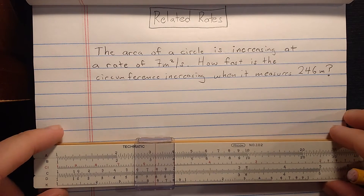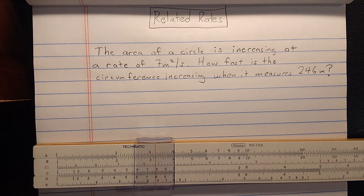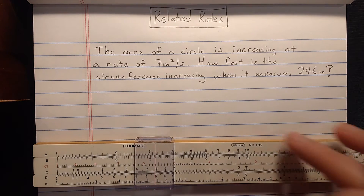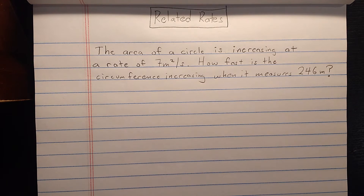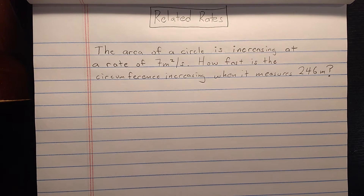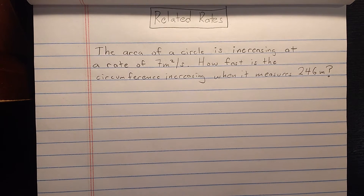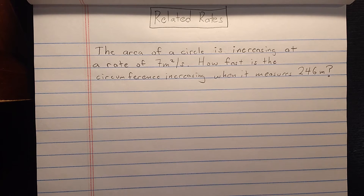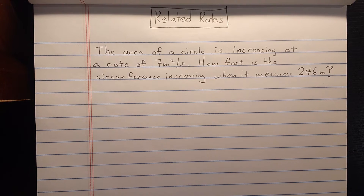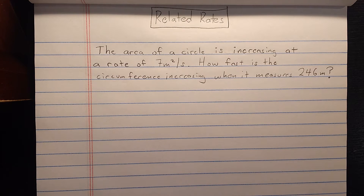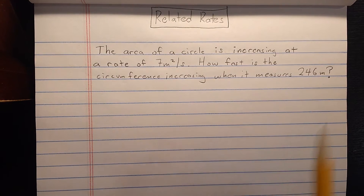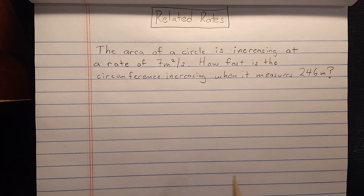Welcome back. Tonight I'm going to solve a couple related rates problems. Here is a typical related rates problem: the area of a circle is increasing at a rate of 7 meters squared per second. How fast is the circumference increasing when it measures 246 meters?